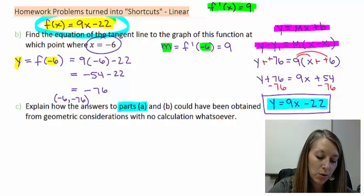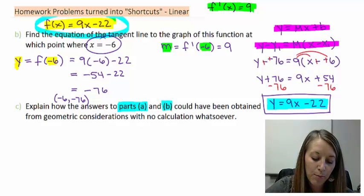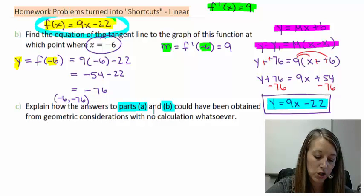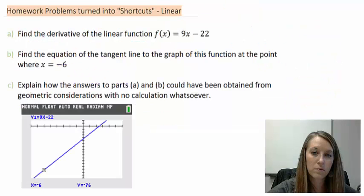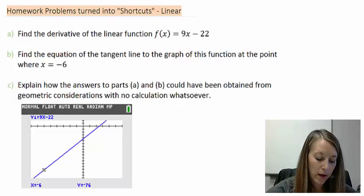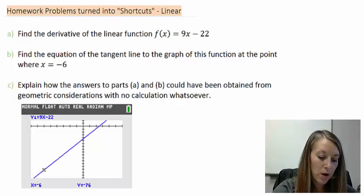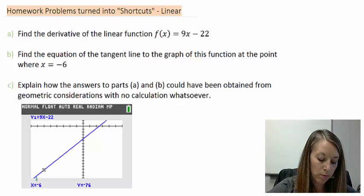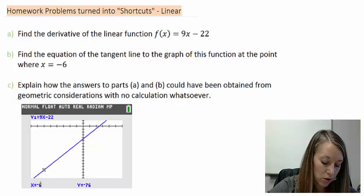If we wanted to answer how could we have came up with part b without using any calculations. Well, if our original equation was a linear equation, let me graph this real quick. I have my graph pulled up here. I have graphed my original equation 9x minus 22. And not only that, but I have the point in question plotted on this. When my x value is equal to negative 6, that gives me this point right here.